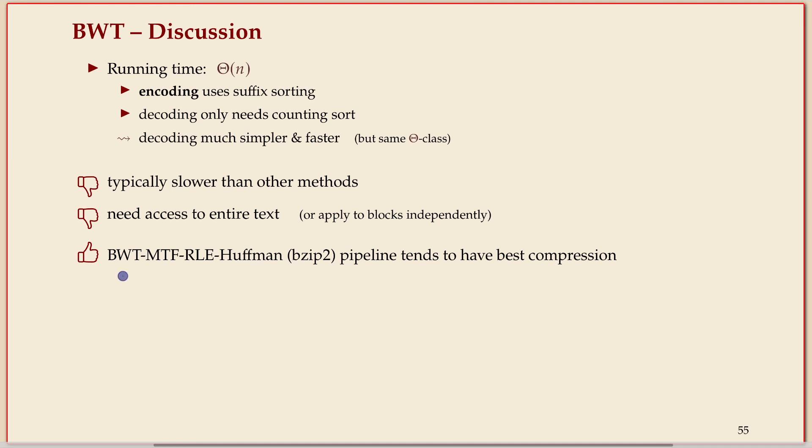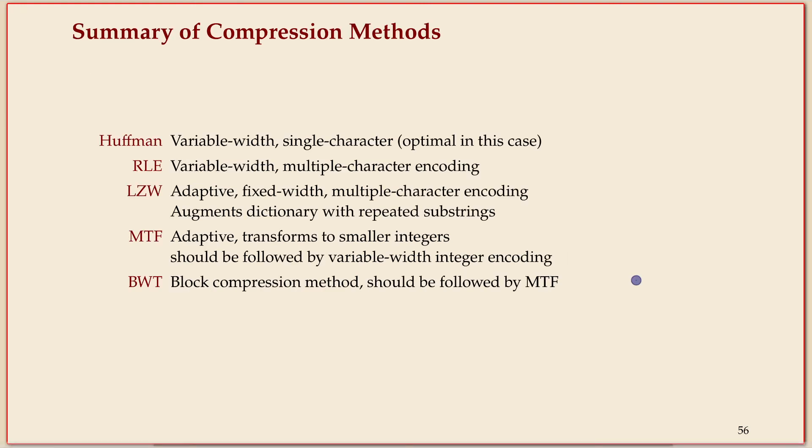I haven't pointed this out - it uses first the BWT, then move to front, then run length encoding, and then a Huffman code. That's pretty much the compression method you've seen, and that's still among the best we have. There are more principled approaches by now that get the same performance and are a bit cleaner to understand, but the module is full enough.